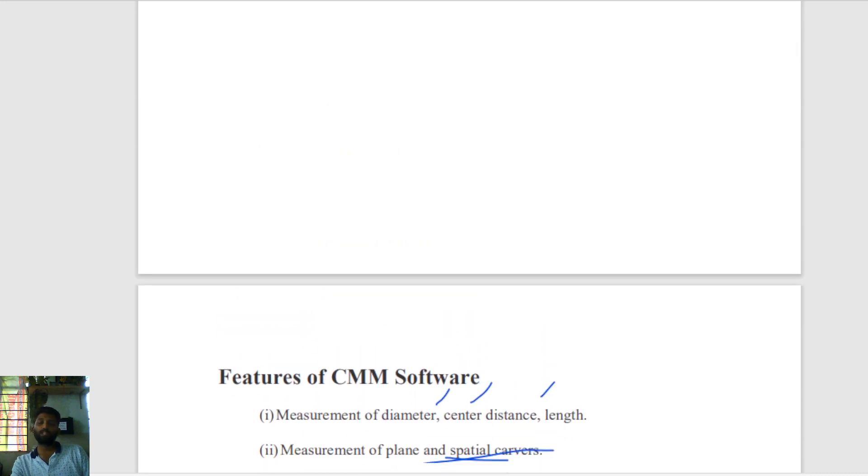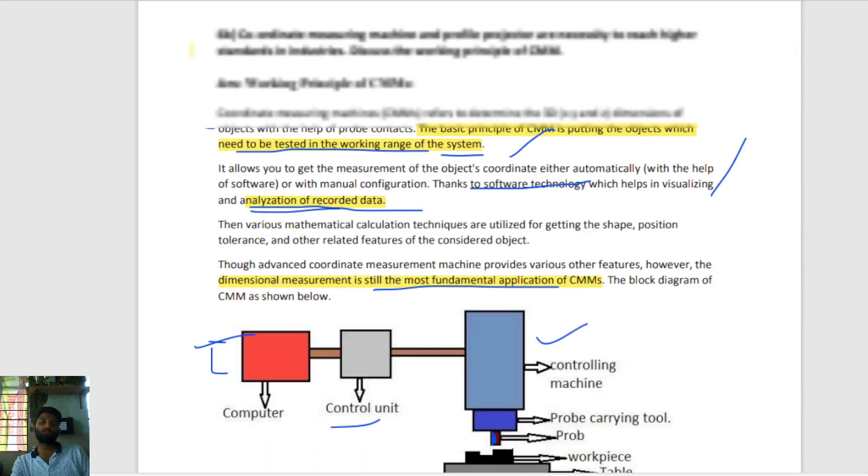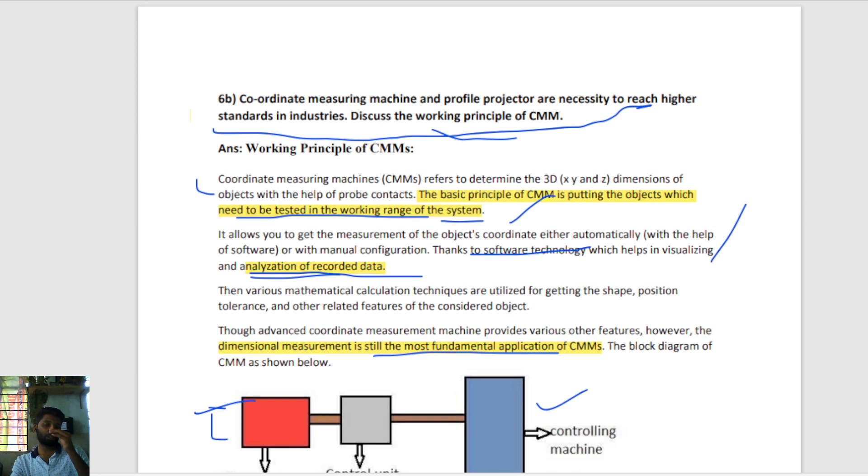Thank you for watching the video. I hope you understood the CMM machine. This is one machine which is used to measure all dimensions and inspect the quality of the product. It is basically used in mechanical industries. Thank you for watching, please do share the video with your friends.